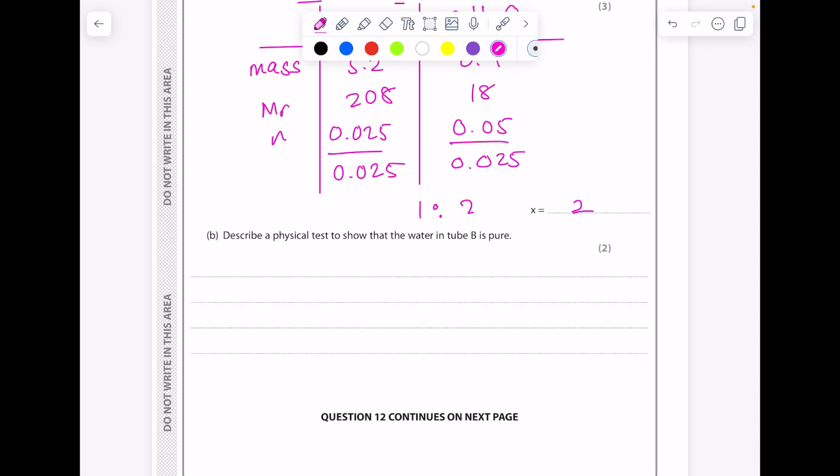Describe a physical test to show that the water in test tube B is pure. The key thing here is it's a physical test, so you need to check the boiling point. And that boiling point, if it's pure, should just be 100°C.